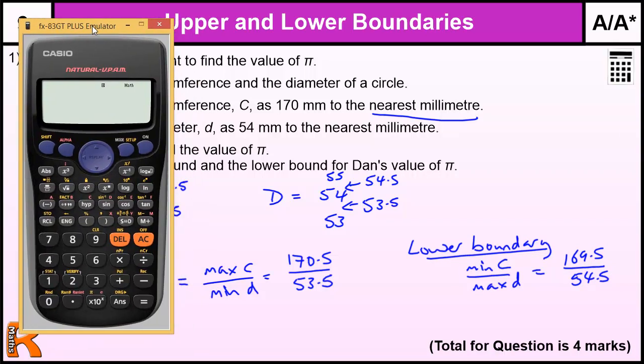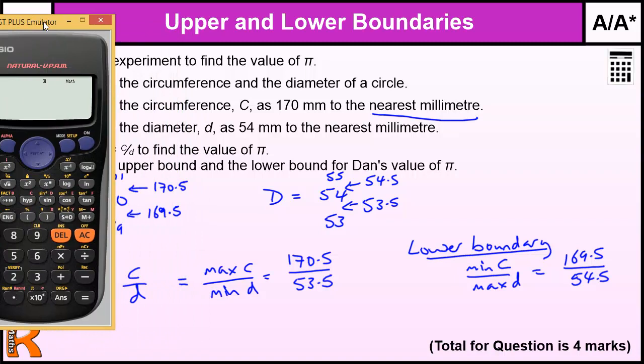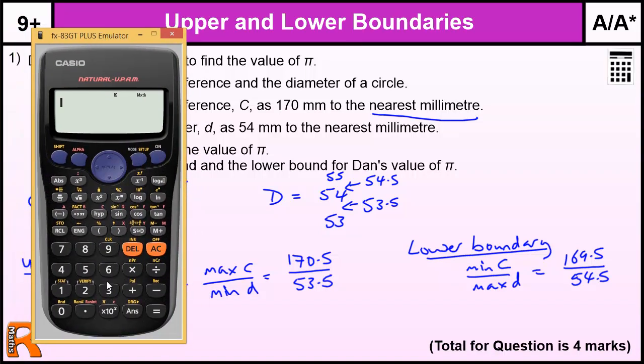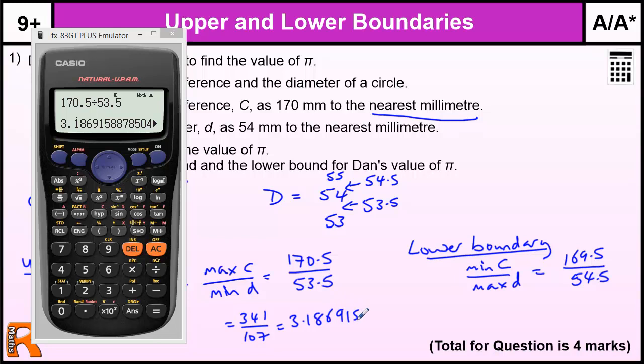So the max value for C is 170.5 and the minimum value of d is 53.5. The lower boundary is going to be the minimum value for C divided by the max value for d. In this case, it's 169.5 divided by 54.5. Let's bring in a calculator and do those calculations. It doesn't say what accuracy to use in your answer, but we'll just write them down. So 170.5 divided by 53.5, and that gives a fraction, 341 over 107.